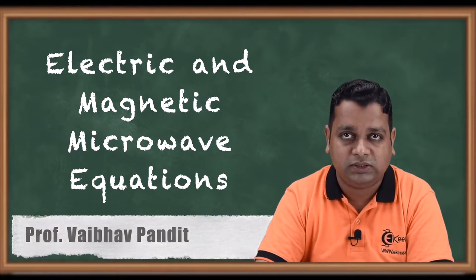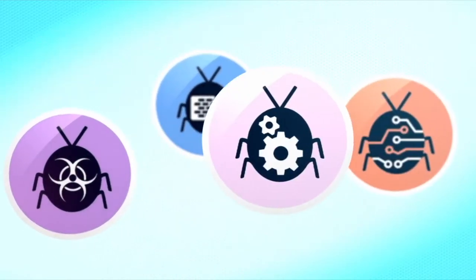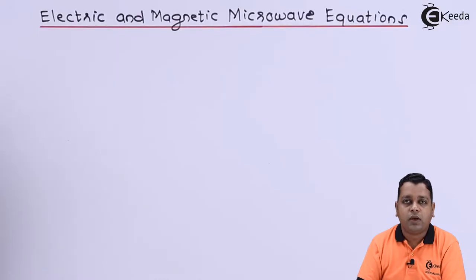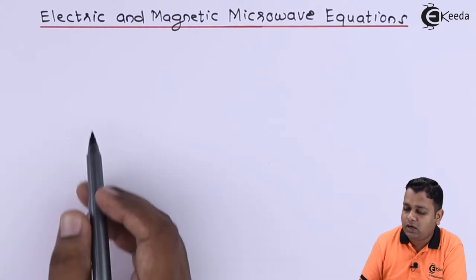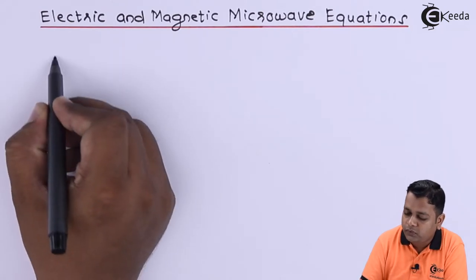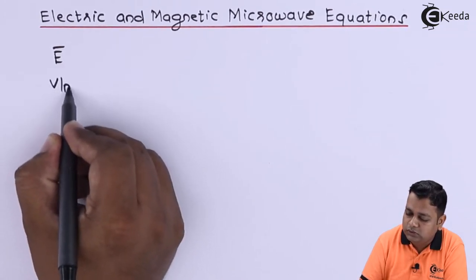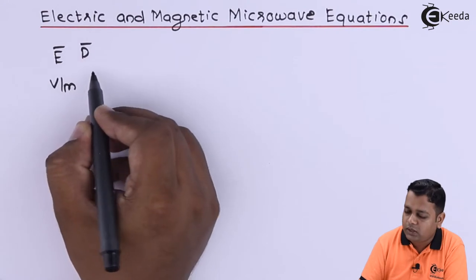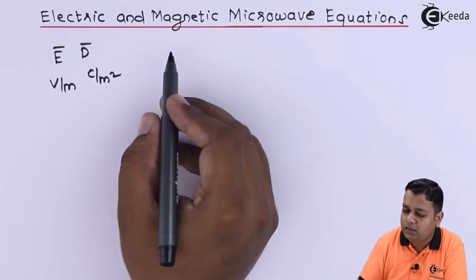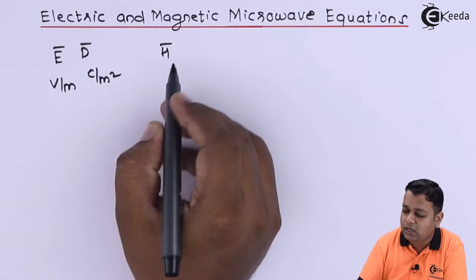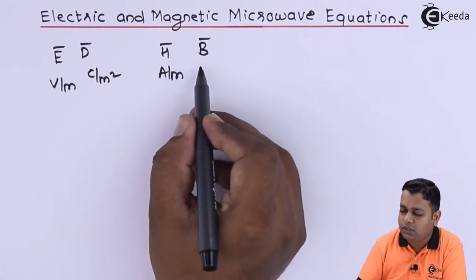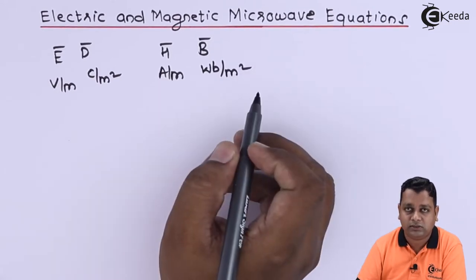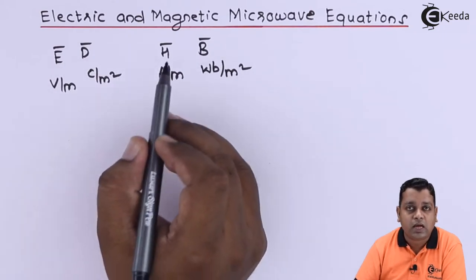As we derive the electric and magnetic microwave equations, recall that the microwave is a basic electromagnetic wave with two fields: electric and magnetic. For the electric field, we have E-bar (electric field intensity, measured in volts per meter) and D-bar (electric flux density, measured in coulombs per meter square). For the magnetic field, we have H-bar (magnetic field intensity, in amperes per meter) and B-bar (magnetic flux density, in weber per meter square or tesla).